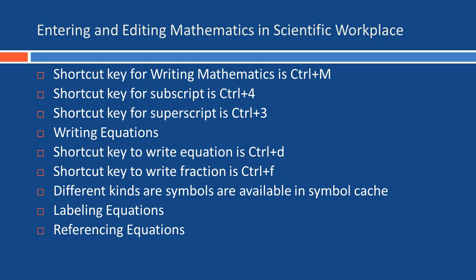First of all we see how we can write mathematics in Scientific Workplace. The shortcut key for writing mathematics is Ctrl+M — press Ctrl and M simultaneously. The shortcut key to write the subscript is Ctrl+4, and the shortcut key for the superscript is Ctrl+3. To write an equation in the center of the document, the shortcut key is Ctrl+D. The shortcut key to write a fraction is Ctrl+F. Different kinds of symbols are also available in the sample cache.